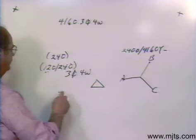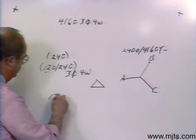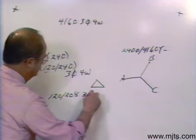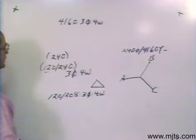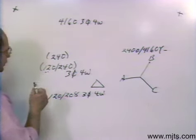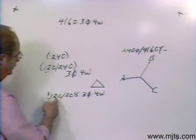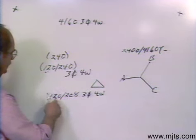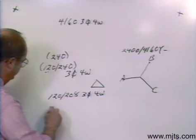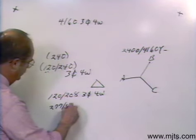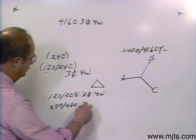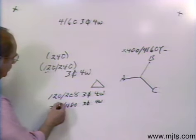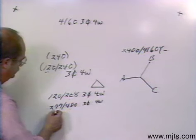On the other hand, if I have numbers that look like this — 120/208, 3-phase, 4-wire — you see we have a 1-to-1.73 relationship. Another example of that would be 277/480, 3-phase, 4-wire. There again, 1 to 1.73. If I wanted this rating, I know that I'm going to have a Y connection on the low side.